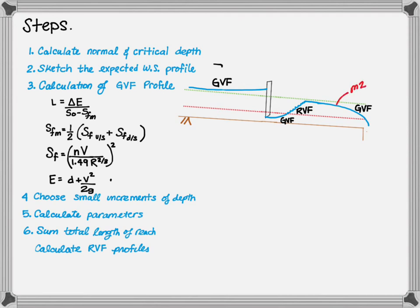You can see we have an M3 and another M1. Next, you're ready to perform the calculations using L = ΔE/(S0 - SF_avg), where SF_avg is the average of the friction slopes. We outlined this in the prior slide.